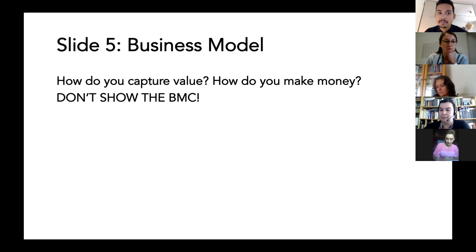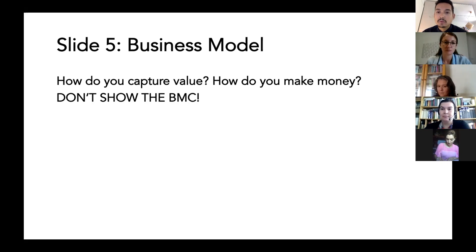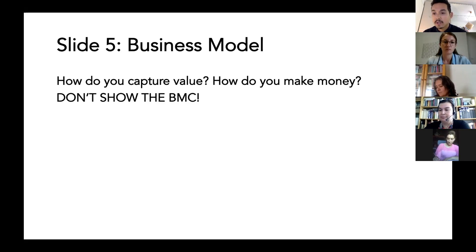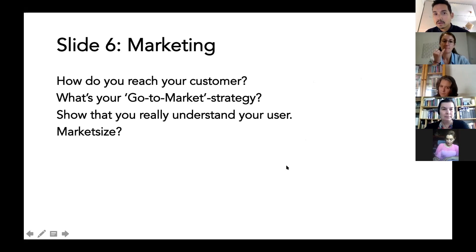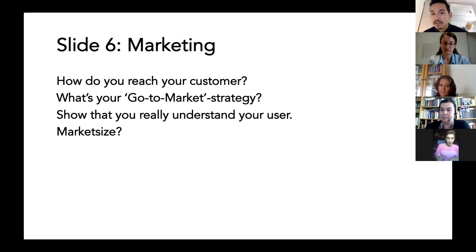The next slide is usually the business model — how do you capture value, how do you make money? Don't simply show the business model canvas here. You can say something like 'we have a long tail business model' — for example, you sell expensive coffee cups but the coffee machine is cheap, like Nespresso does it. You can use analogies: 'we are the Uber of mental health' or 'we are the Tinder for mental health,' to make it easy to understand. Then there's marketing — your go-to-market strategy, how you actually deliver the product to people.